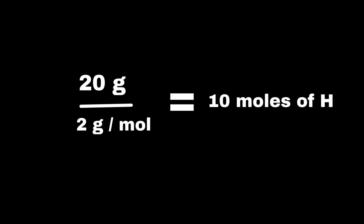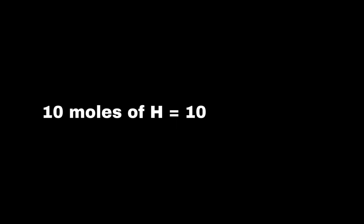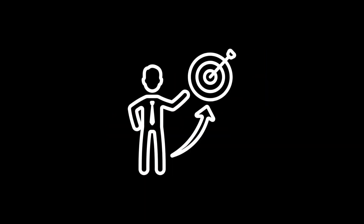For example, let's say we have 20 grams of hydrogen and want to know how much water can be produced. First, we convert the mass of hydrogen to moles by dividing by the molar mass of hydrogen, 2 grams per mole: 20 g ÷ 2 g/mol = 10 moles of hydrogen. Next, using the balanced equation, the mole ratio between hydrogen and water is 2 to 2, so 10 moles of hydrogen will produce 10 moles of water. Finally, we convert those moles of water into mass by multiplying by the molar mass of water, 18 g/mol: 10 moles × 18 g/mol = 180 grams of water. Mass-to-mass calculations allow us to predict how much product will form from a certain amount of reactant, or how much reactant is needed to produce a specific amount of product.